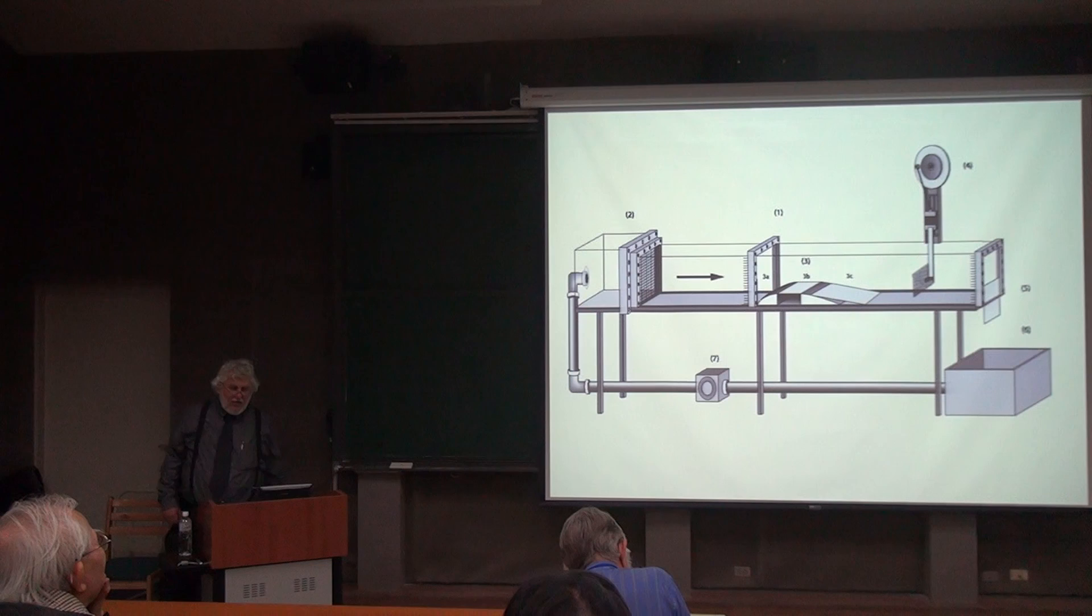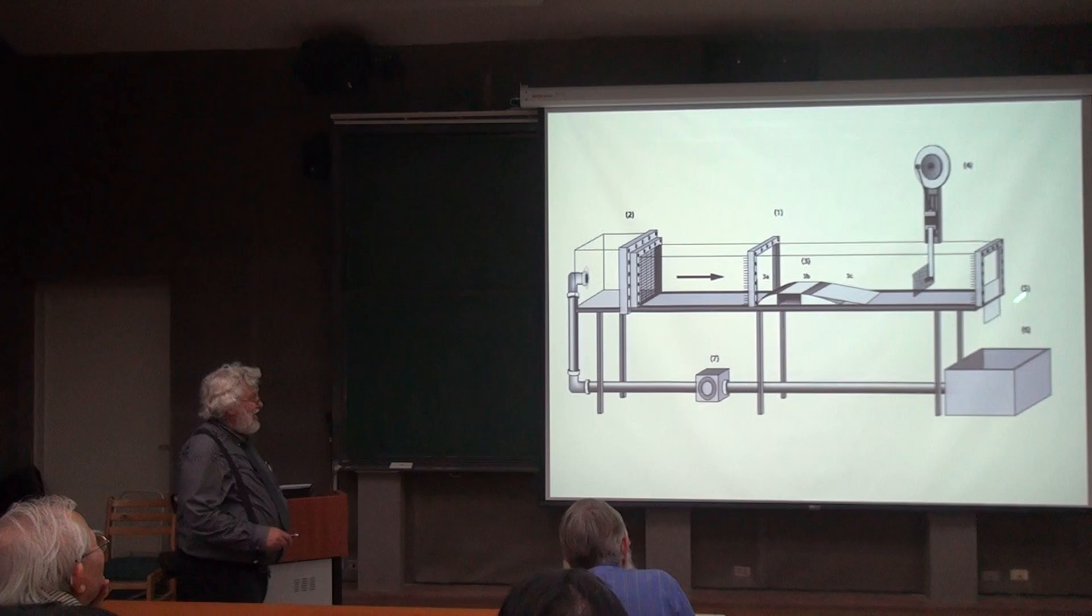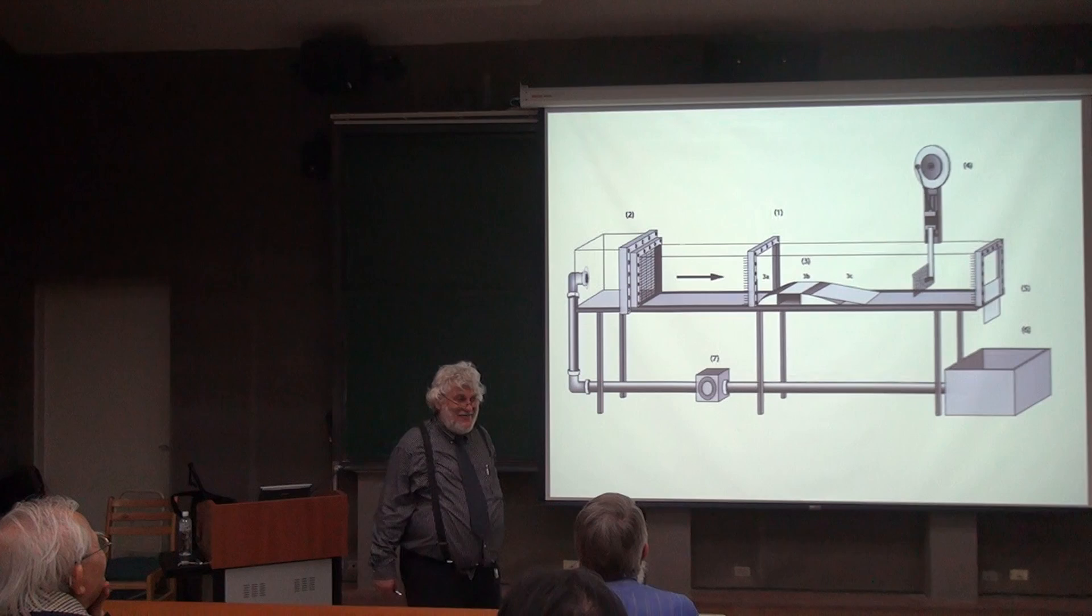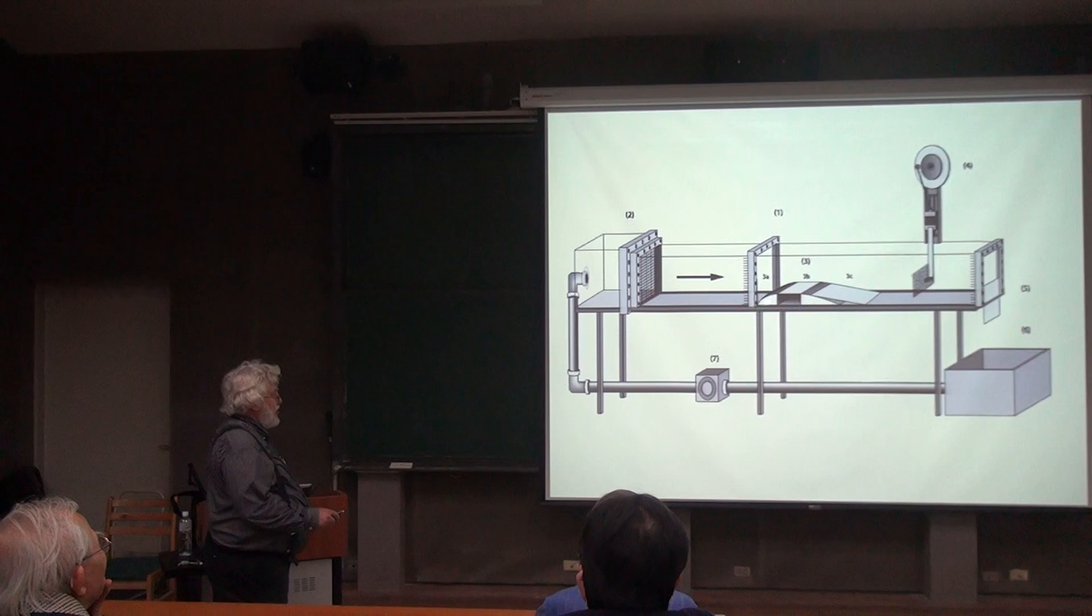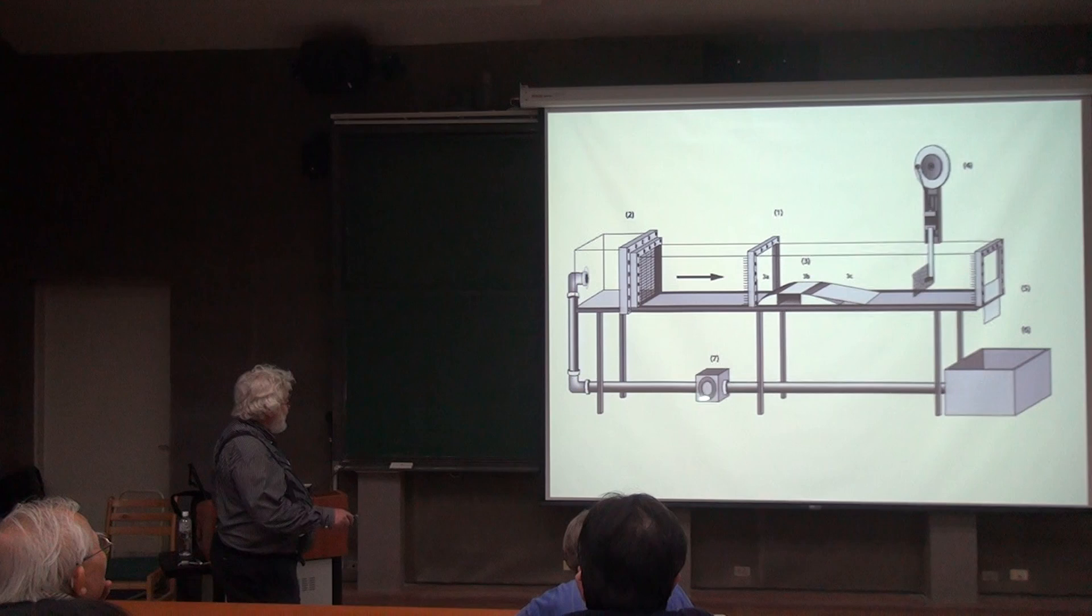This is what the experiment looks like. I like this diagram because this diagram could have occurred in a 19th century physics textbook. Same kind of idea. What we have here is a flume, side walls made out of plexiglass. There's an obstacle.